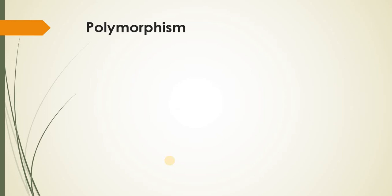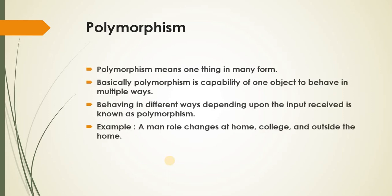The next concept is polymorphism, which is also the most important. Polymorphism means one thing in many forms. Poly means many, morphism means forms. Basically, polymorphism is the capability of one object to behave in multiple ways. Behaving in different ways depending upon the input received is known as polymorphism. For example, a man who changes roles at home, college, and outside. I am an employee of some company, but for my parents I am a child, but for my child I am the father. So I can change my role — this is the best example of polymorphism.